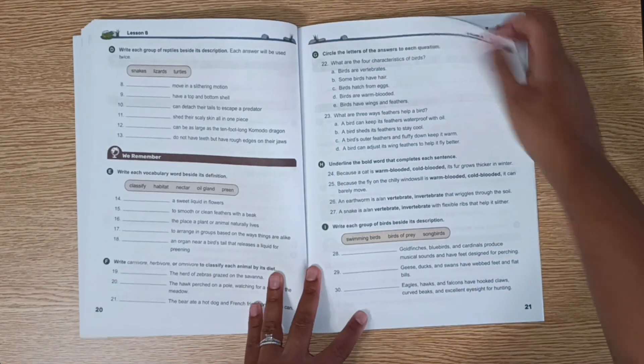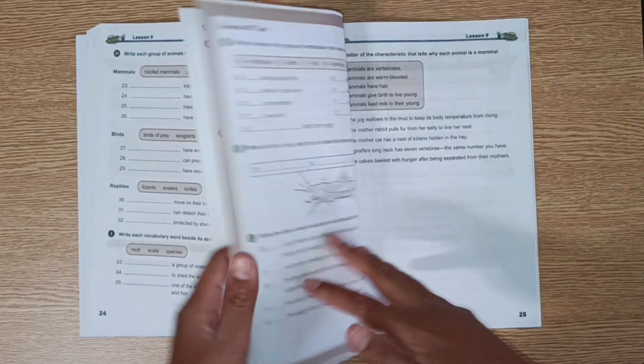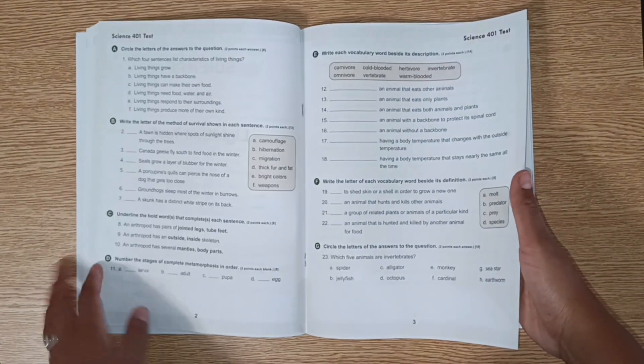Birds, reptiles, amphibians, fish. This is the test that you'll pull out before giving the workbook to your child.